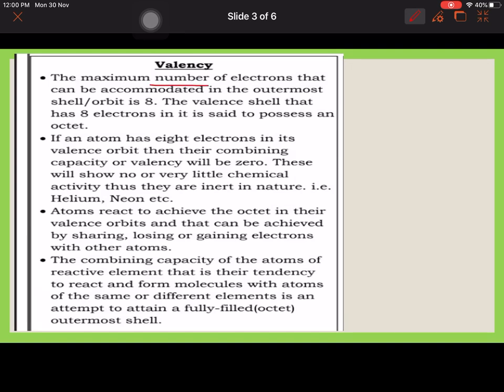Different points: the maximum number of electrons that can be accommodated in the outermost shell is 8. The valence shell that has 8 electrons is said to possess an octet.